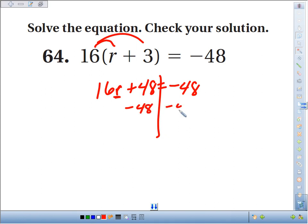Get rid of the plus 48 by minus 48 on both sides. They cancel here. We get 16r equals negative 48. 48 minus 48 more is negative 96.